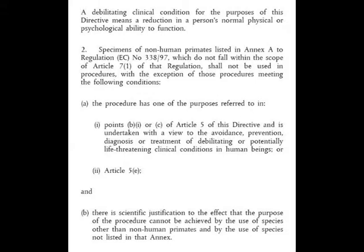For part two of Article 8, just to reiterate, this gives them a large scope to allow experiments on non-human primates listed in Annex A — which probably refers to monkeys of slightly endangered species, not the usual marmosets and macaque monkeys typically experimented on, but other monkeys. They're just covering their bases there. Let's skip on to part three of Article 8 to look at great apes.